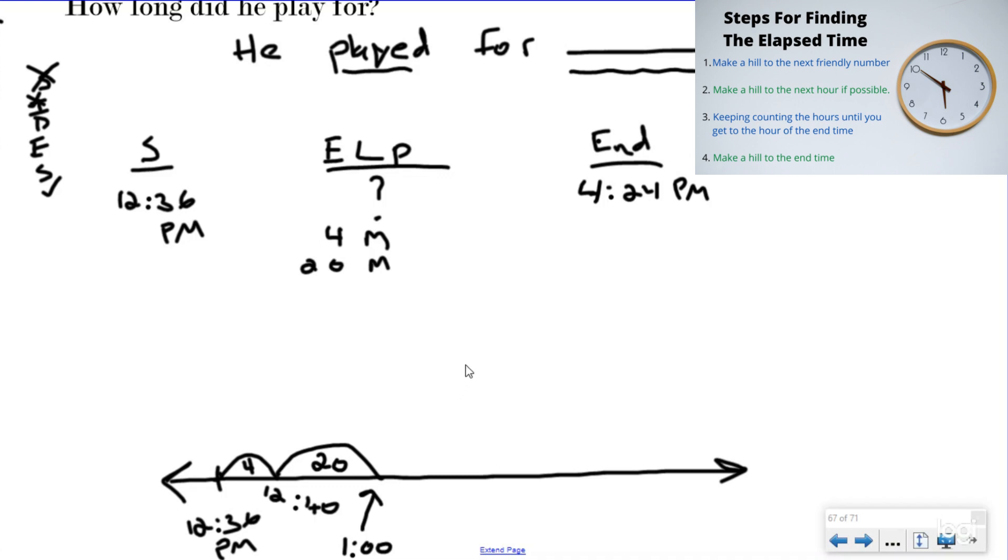Now, I'm at the closest hour. So if I'm at 1 o'clock, I'm trying to get to 4. So I'm going to add three mountains. And each one is going to be one hour. And if I do one, then I add hour. That would be 2, 3, 4. So now I'm at 4 o'clock. And if I'm at 4 and I'm trying to get to 4:24, I just need a 24-minute hill here.